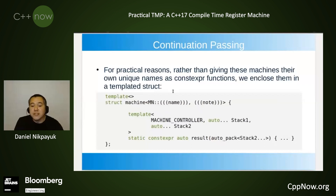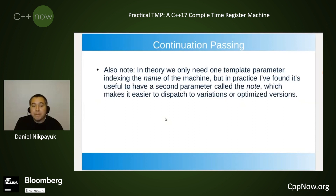For practical reasons, rather than giving these machines their own unique names as constexpr functions, we enclose them in a templated struct, rename the function as 'result', and make it a static member function of a struct we call 'machine'. In theory, we only need one template parameter indexing the name of the machine, but in practice I've found it useful to have a second parameter called the 'note', which makes it easier to dispatch to variations or optimized versions.